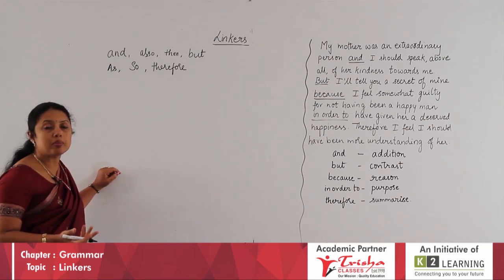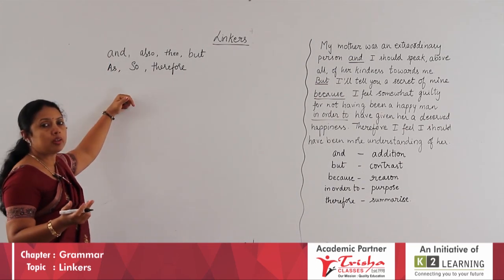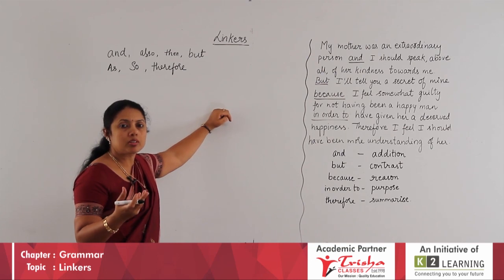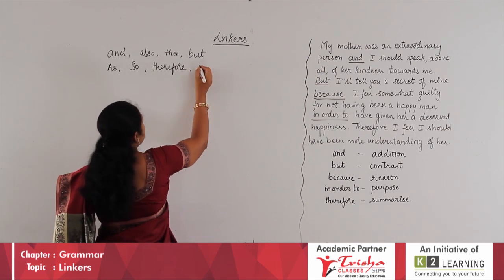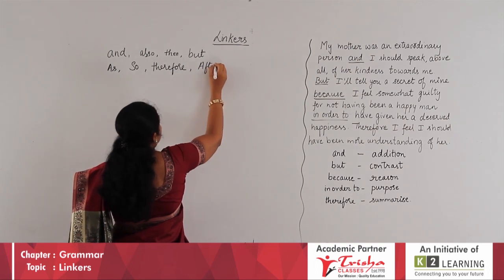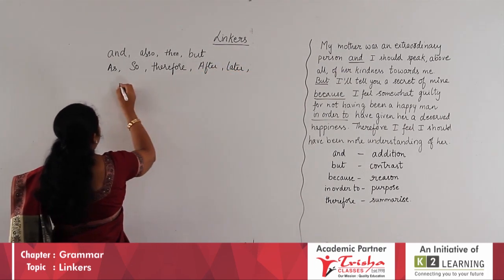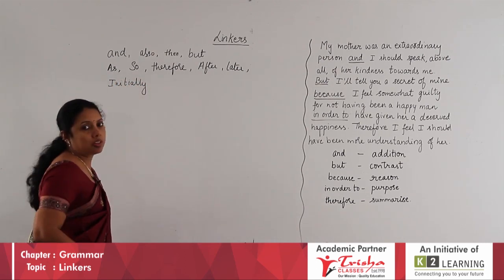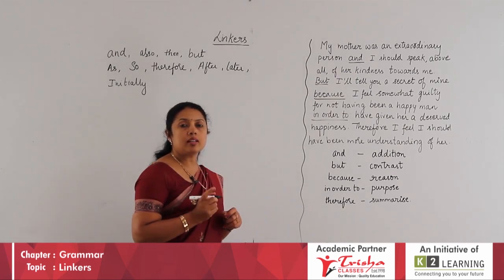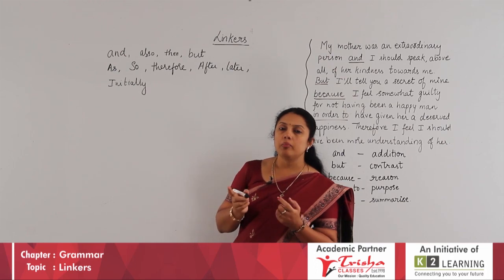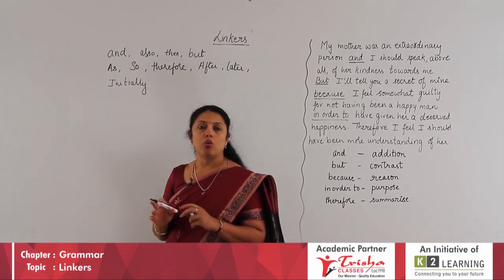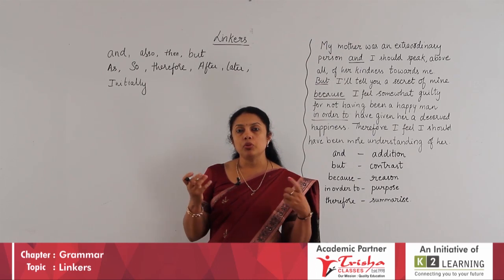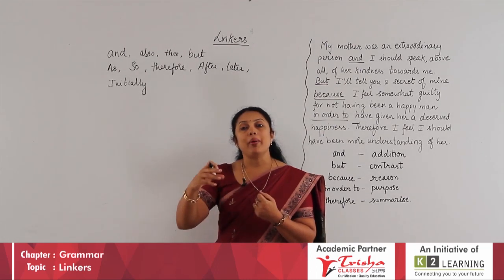We started learning conjunctions this way — from the most commonly used to slightly more abstract, stronger, and difficult words. We also understood that AFTER, LATER, and INITIALLY all come under the category of conjunctions. Conjunctions need not necessarily just join sentences with AND, BUT, ALSO, THEN, or THEREFORE. Conjunctions are words used to join sentences to give a better meaning.